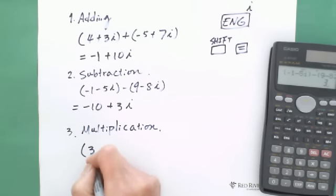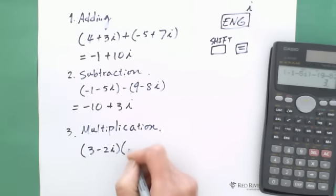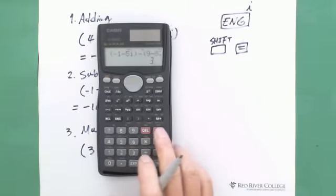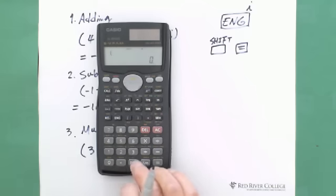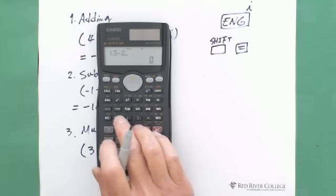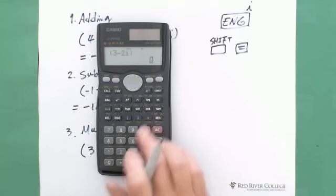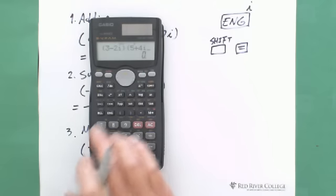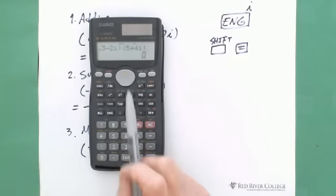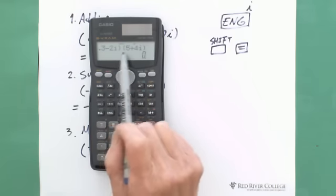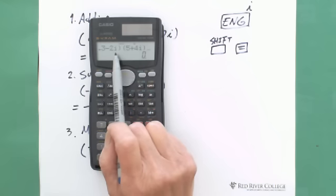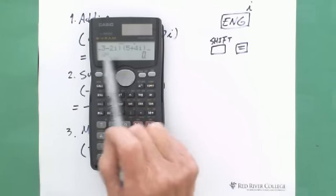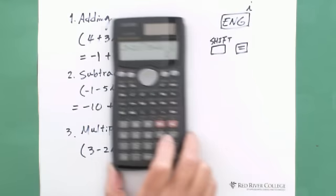So this is subtraction. And number 3 is multiplication. If we have 3 minus 2i multiply 5 plus 4i. You can see, if you don't put the brackets, then the calculator will do 3 minus 2i times 5, not the full expression. So that's why you need to put the brackets.